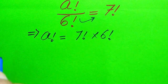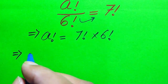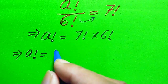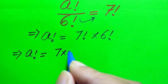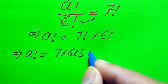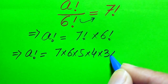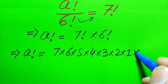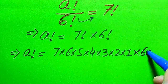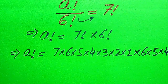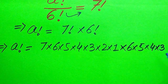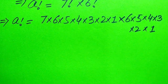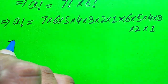We solve this with the help of the factorial definition. For 7 factorial we multiply from 7 down to 1: 7 × 6 × 5 × 4 × 3 × 2 × 1, and this is multiplied by 6 factorial. And 6 factorial equals 6 × 5 × 4 × 3 × 2 × 1.